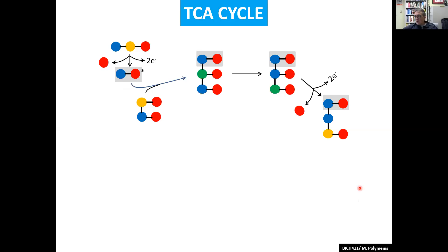This is where we are in the cycle in terms of the redox color coding of all the carbons. We lost a CO2. There is one left. This hydroxycarbon got oxidized to a carbonyl carbon, and the two electrons found their way onto NADH.